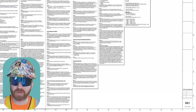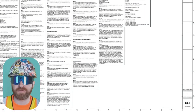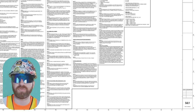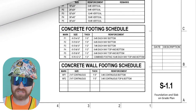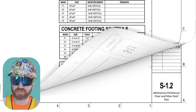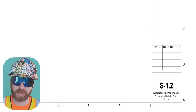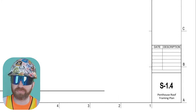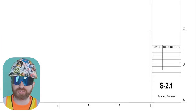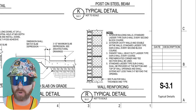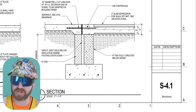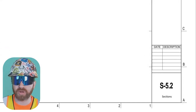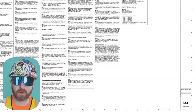I'm going to assume we did an initial pass through all the drawings — civil, architectural, mechanical, plumbing, etc. — and we're now going to focus on the structural drawings. So first we have S0.1, the general notes. Next is S1.1, foundation slab on grade plan. Then S1.2, mechanical penthouse floor and main roof plan. After that S1.3, lobby roof framing plan. Up next is S1.4, the penthouse roof framing plan. Then S2.1, braced frames; S3.1, typical details; S4.1, sections; S5.1, sections continued; and finally S5.2, sections continued again.